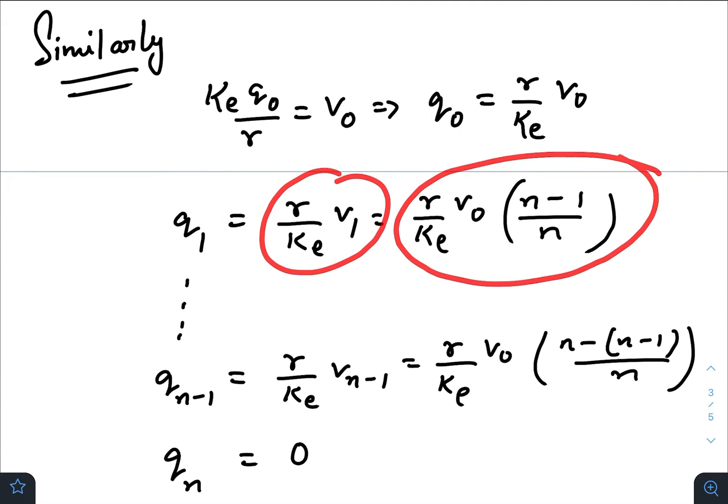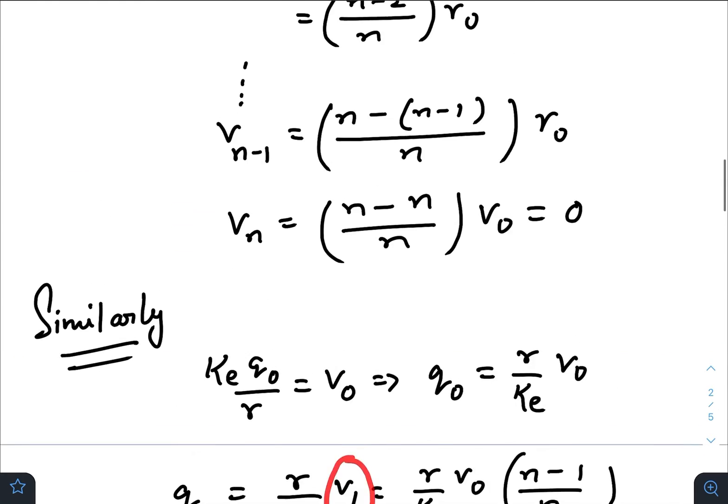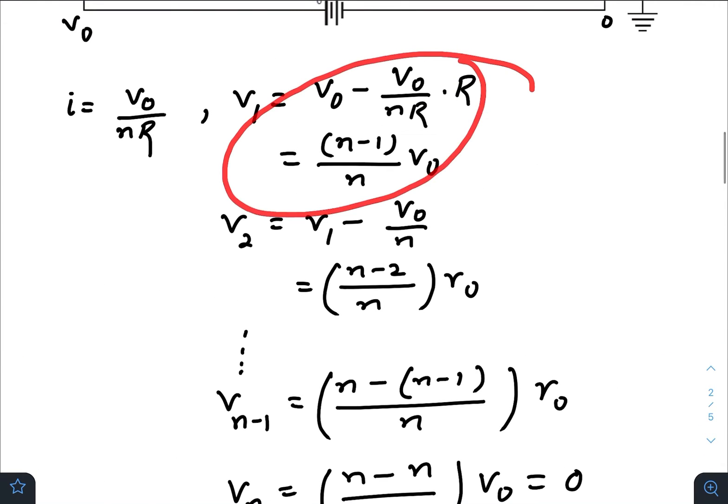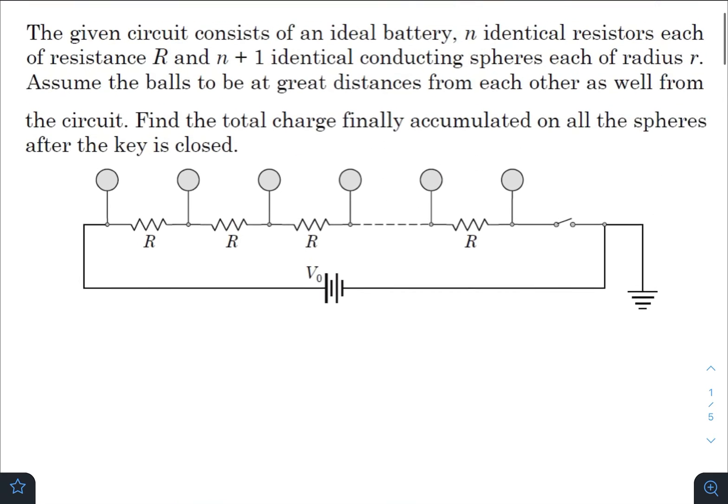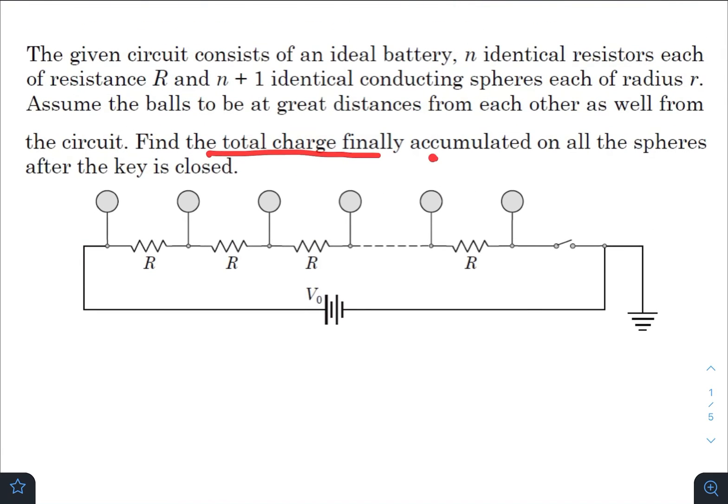We got this in our initial equation. We will reach till just before q_n, that is q_{n-1}, which would look something like this. Now in the question they have asked for the total charge finally accumulated on all the spheres after the key is closed.